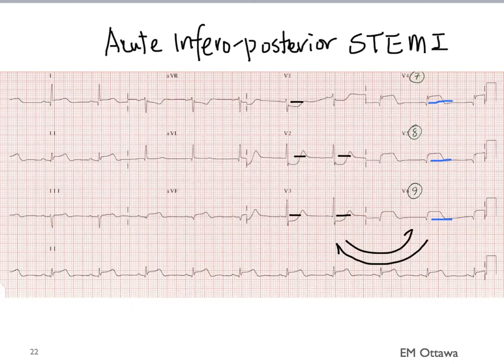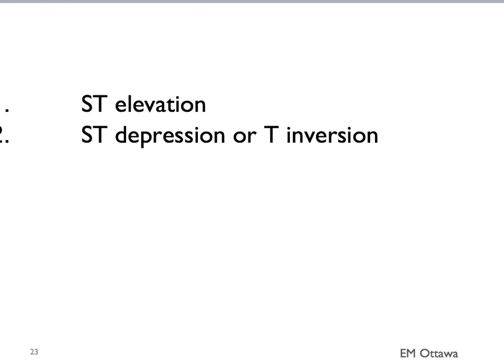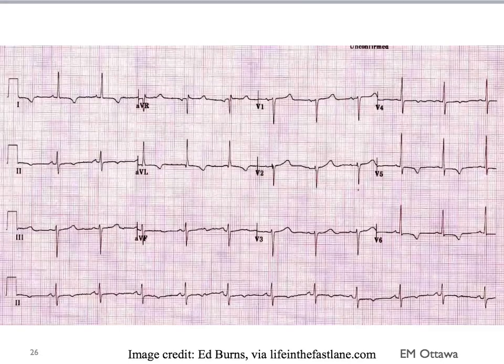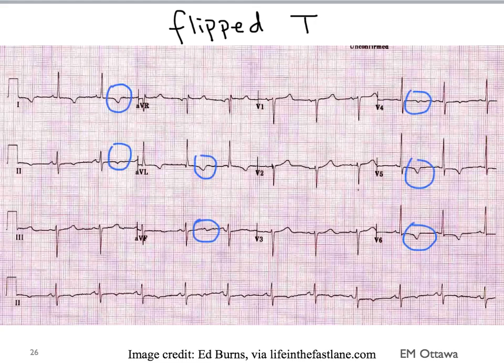After we look for ST elevation and see whether they are territorial or reciprocal on the 12-lead ECG, we then look for ST depression or T-wave inversion in patients with potential ACS. The difference with ST depression is that it denotes ischemia — it is not territorial or reciprocal like infarct. Looking at this ECG, you can see ST depressions almost everywhere; it's not territorial and not reciprocal. If there are no ST depressions, we look for T-wave inversion or flipped T's. Where do you see the flipped T's in this ECG? They are in multiple leads. If they are new, then we have to be very concerned about ischemia.